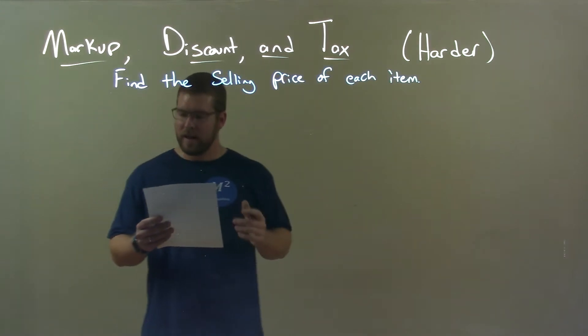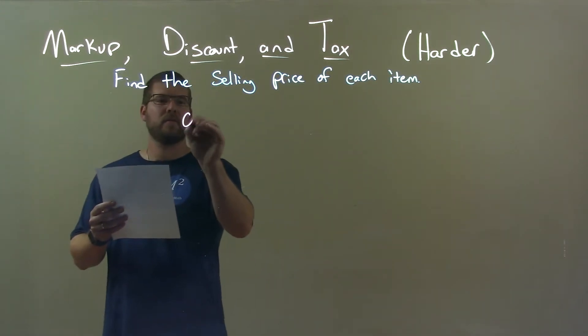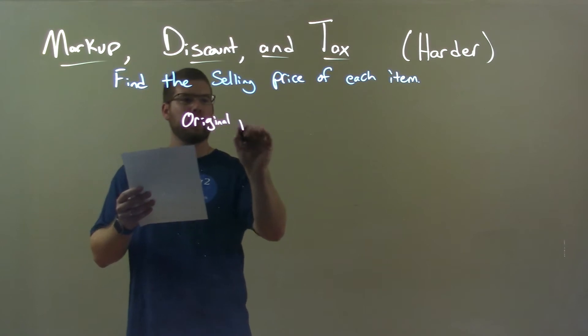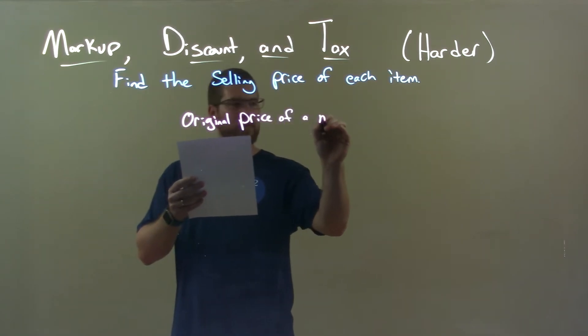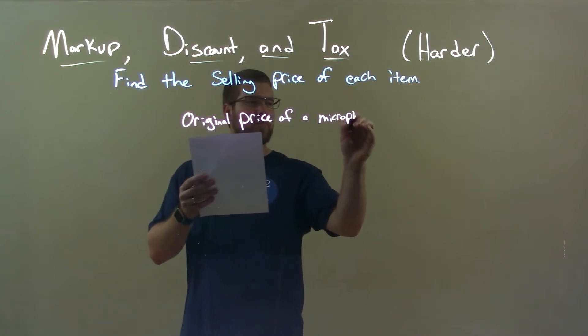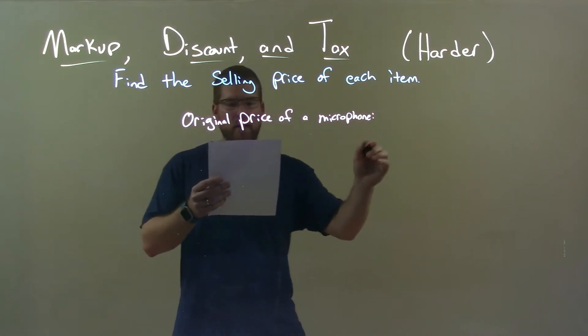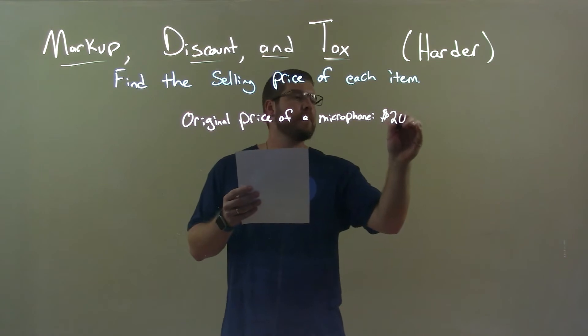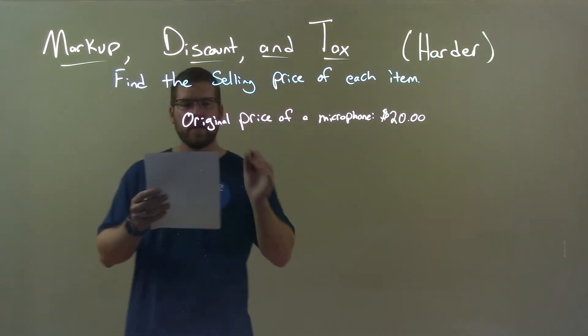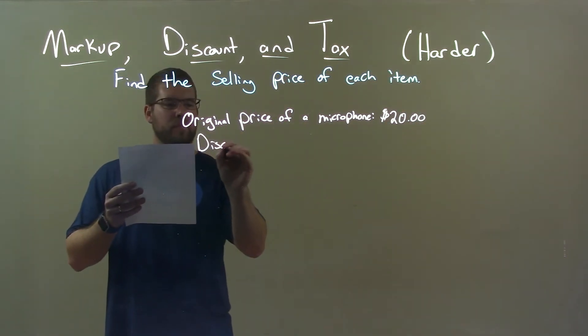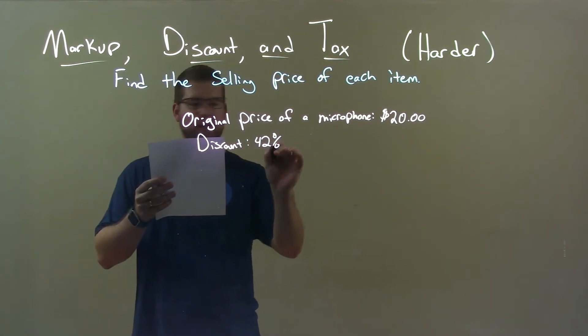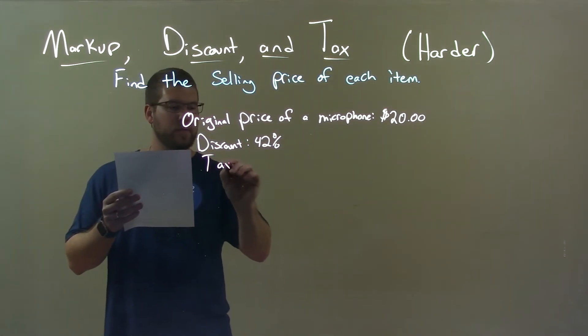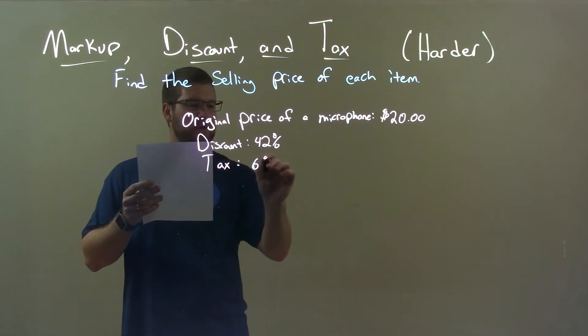If I was given this item, the original price of a microphone is $20. We have a discount of 42% and we have a tax on top of that, which is 6%.